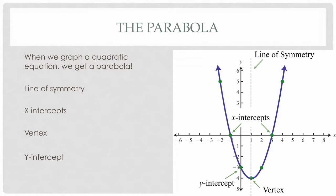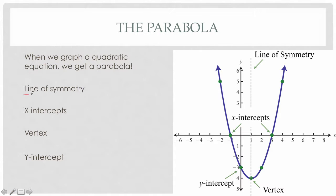Let's talk about the parabola — that's a fancy math word, it's parabola — and that's what we call the graph of a quadratic equation. Some characteristics of a parabola: it's symmetrical, which means there's a line of symmetry that cuts the parabola in half. If I go to the right and go to the left, it's the same distance away from the line of symmetry.